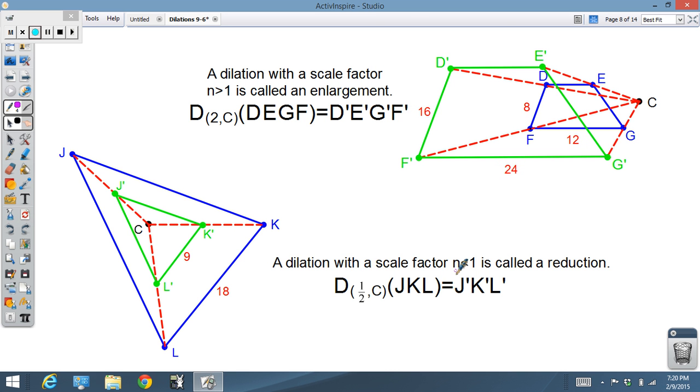If our scale factor is between 0 and 1, remember we said before it had to be bigger than 0, but if it was less than 1, it's called a reduction. In this case I'm looking at a scale factor where we're using 1 half. Again, center of dilation is point C, and J, K, L becomes J prime, K prime, L prime. Every distance now from the original is cut in half. Dilations include enlargements and reductions.